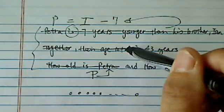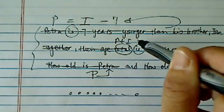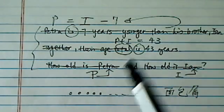Together their age total, well total is P plus I. The word is means equal 43. Now what do you know?